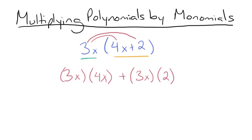So now all we have to do is multiply each of these sets of monomials. We're going to multiply 3x by 4x and get 12x squared. And then 3x times 2 is 6x, so plus 6x. And that's our answer. Not too challenging. Let's try another one.